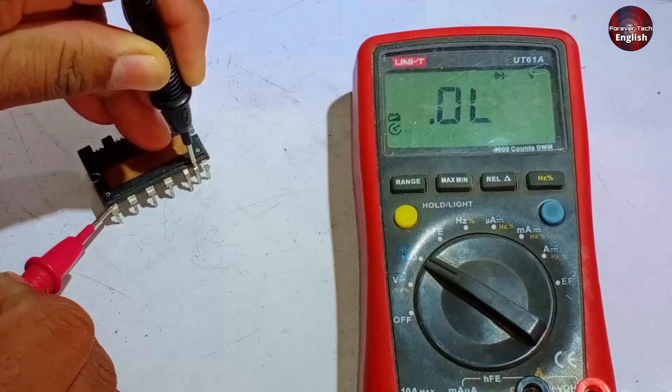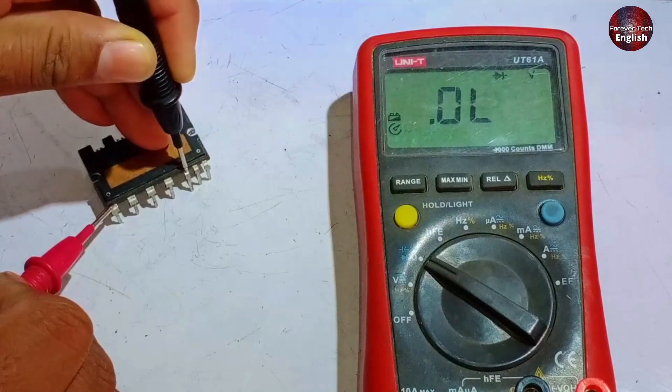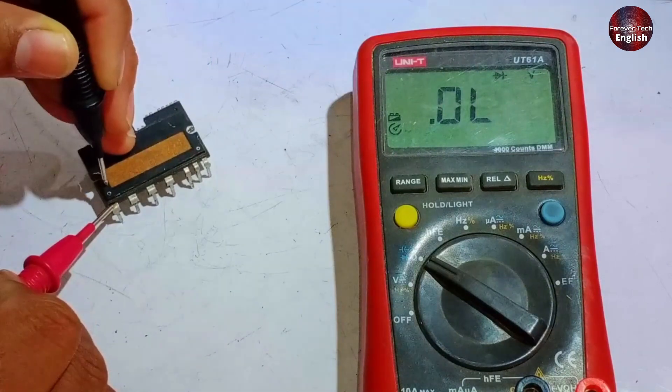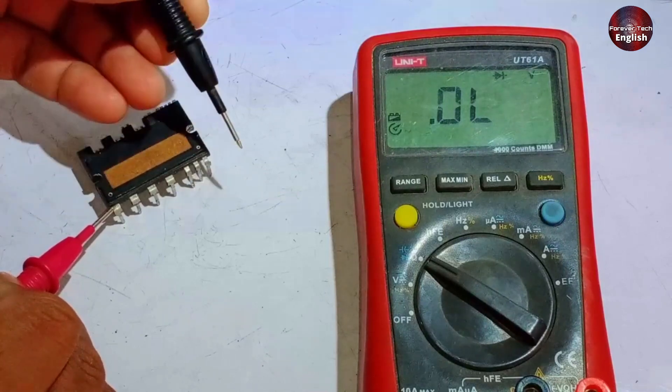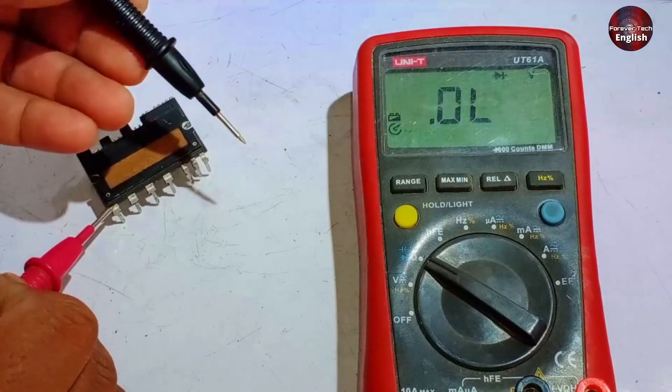Similarly, no value should be displayed at the next point, nor at the following points. This is because we are now on the cathode side of the diode, and the anode is connected to the negative, which is why no value will be shown here.